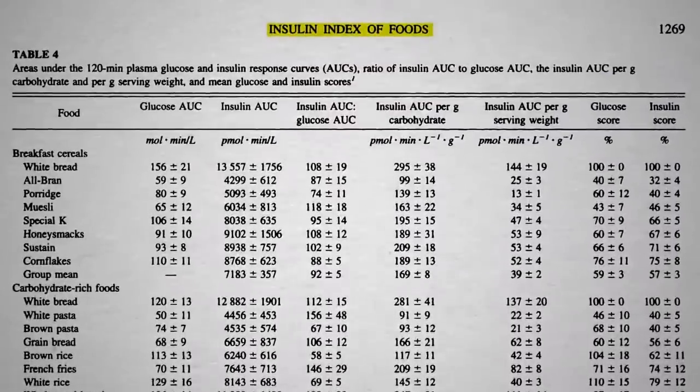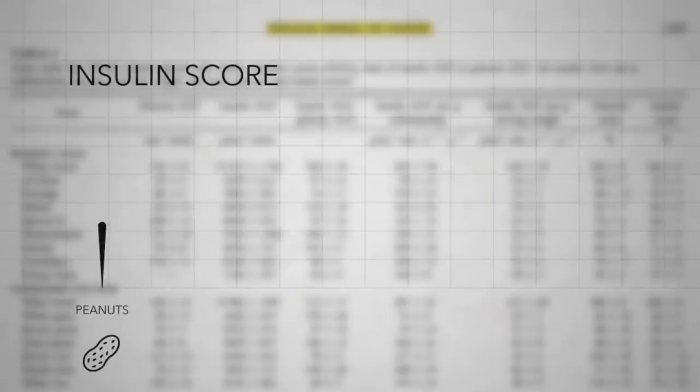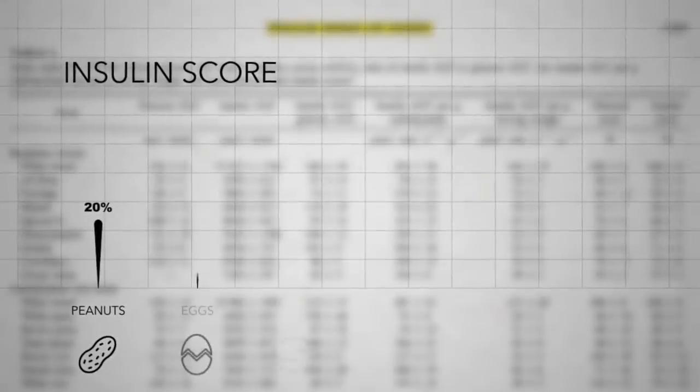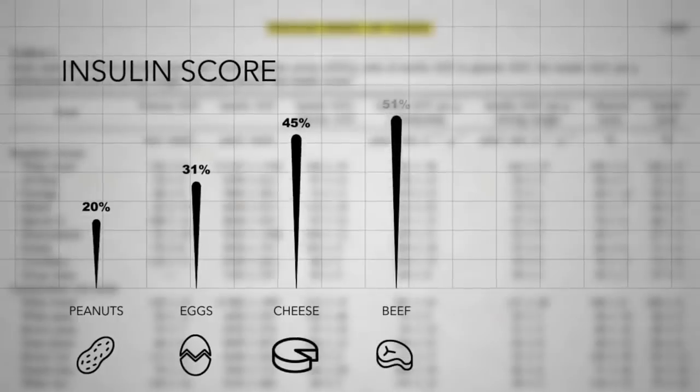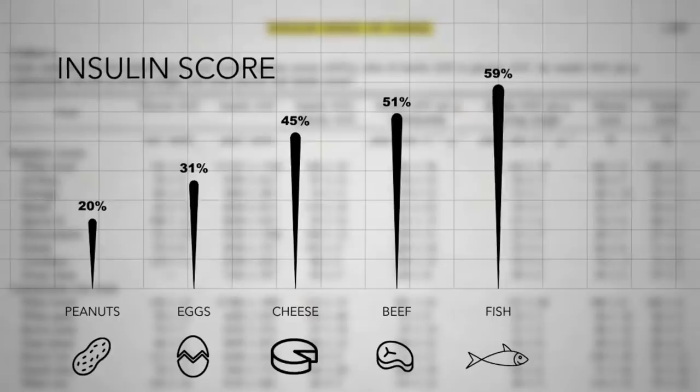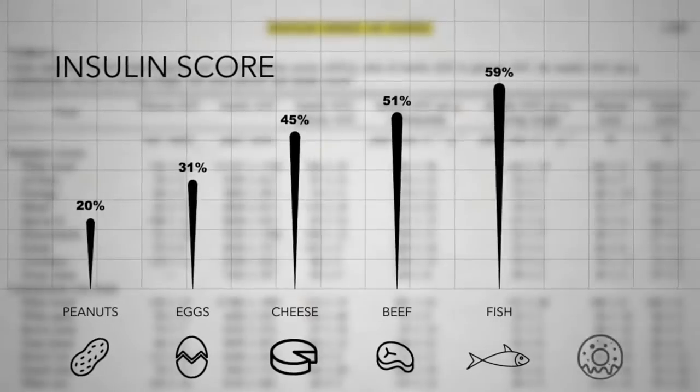Here's the insulin score of a low-carb plant food like peanuts, compared to common low-carb animal foods: eggs, cheese, and beef. But fish was even worse, closer to doughnut territory.